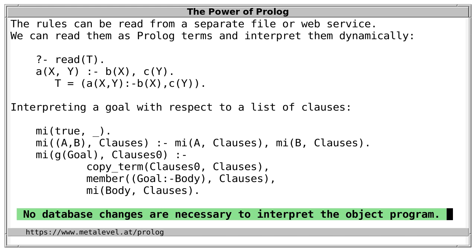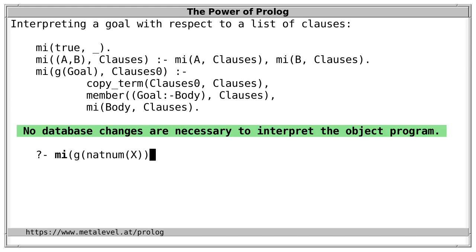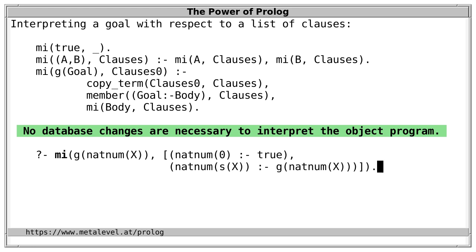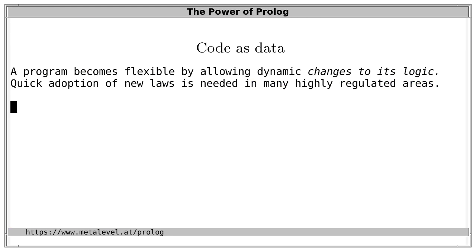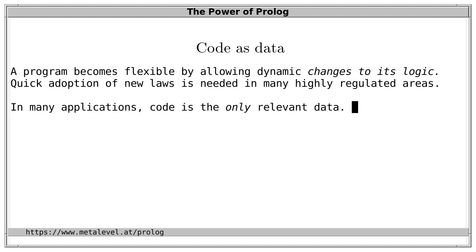For example, we can interpret our natNum example by dynamically specifying the rules: one clause for the fact where the body is true, and one for the recursive rule. We get our usual solutions: 1, 2, 3 and so on. We can easily extend and adapt programs with new code, specify dynamically, and interpret it in exactly the way we want. For example, we can write a meta-interpreter that runs a program and at the same time prevents certain things such as network connections and file access — only interpreting safe goals.